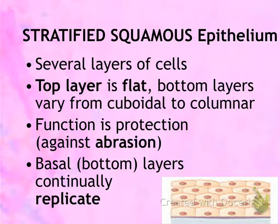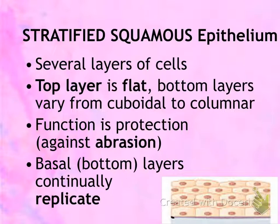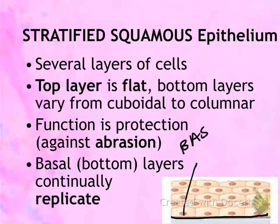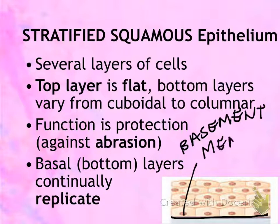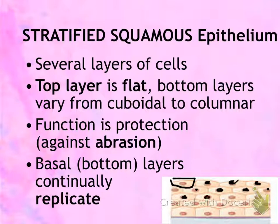The top portion of the epithelium that is not attached to anything is called the apical surface. The portion that is attached to the connective tissue is called the basement membrane, or sometimes called the basal layer. Most of the time you will not be able to see the actual outline of the cell, but you will definitely see the dark, circular, oval-shaped, or flat structures — those will be your epithelium.